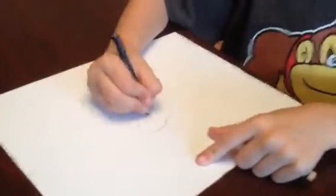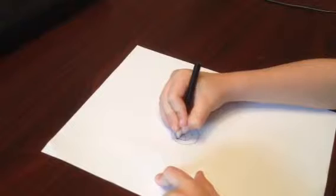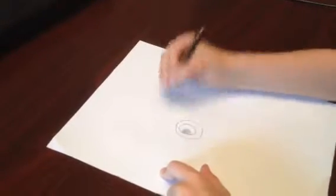So first, you have to draw a medium circle, and then you draw a circle inside. Then, you draw like a semicircle, but it's facing that way right there.